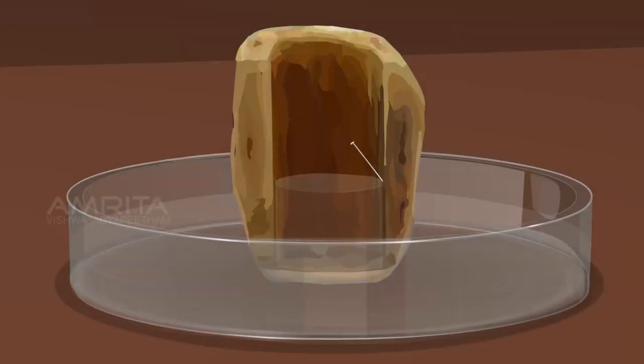Observation. The level of sugar solution in the potato cavity rises after some time due to the entry of water into the sugar solution through selectively permeable membrane of the cells of the potato.